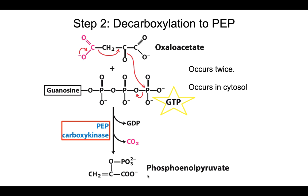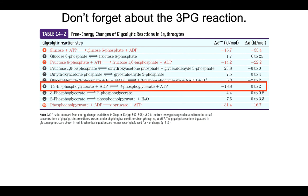In total, we have had to spend two ATP and two GTP to convert two pyruvates into two phosphoenolpyruvates — quite a bit of energy invested into this reaction. From here, we can use all of the enzymes of glycolysis in the opposite direction until we reach step 3, where we have fructose 1,6-bisphosphatase, and then at step 1 we have glucose 6-phosphatase, and we end up with glucose.